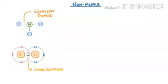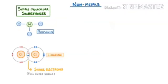Covalent compounds are formed by mutual sharing of electrons. These covalent compounds are of two types: simple molecular substances and giant covalent structures.